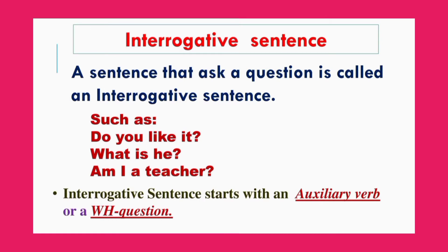Interrogative sentence: a sentence that asks a question is called an interrogative sentence. A sentence used to ask something is called a question or interrogative sentence. Such as: 'Do you like it?' 'What is he?' 'Am I a teacher?' In an interrogative sentence, we use a question mark at the end of the sentence.